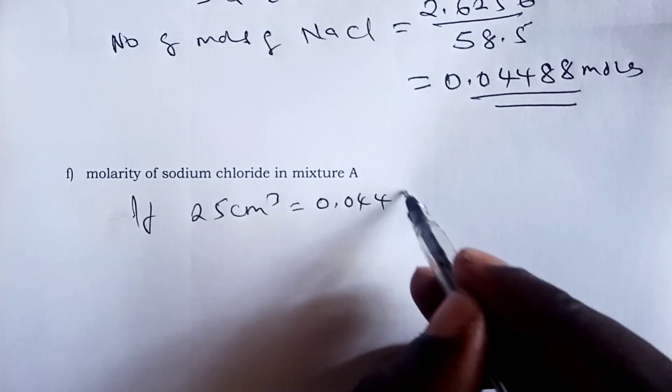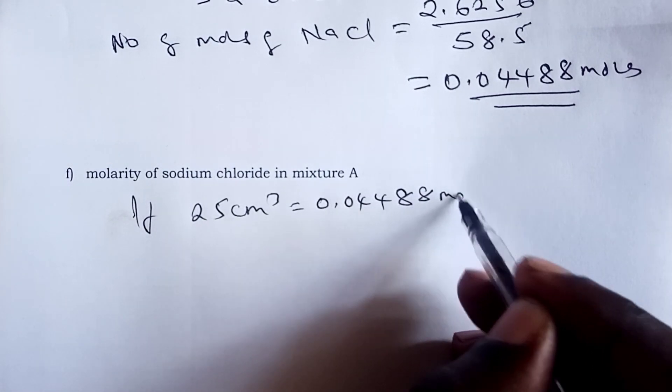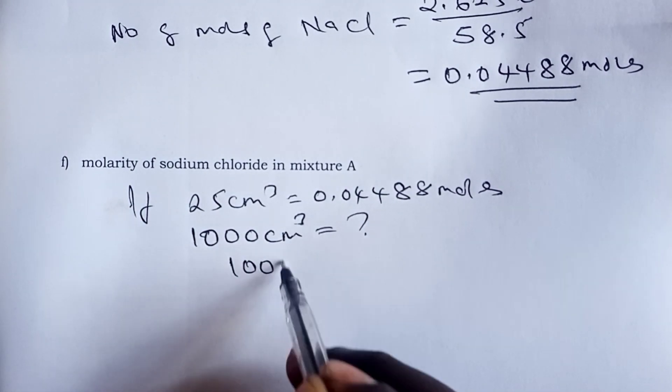So to get the answer for part F, you would argue that if 25 cubic centimeter is giving us 0.04488 moles, how much would one liter give us? So simple cross multiplication, 1000 times 0.04488, we divide by 25. And our answer becomes 1.7952 molar sodium chloride.